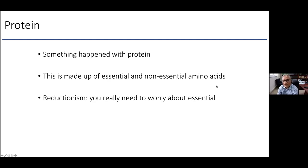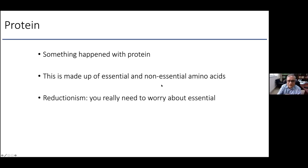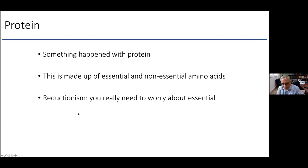What happens with protein? Protein is made up of chemicals called amino acids. Some amino acids you cannot make in your body — these are called essential amino acids. Some you can make in your body — these are called non-essential, meaning you don't need to eat them every day. In our reductionist framework, we worry only about the essential ones, because those are what you must eat on a daily basis.